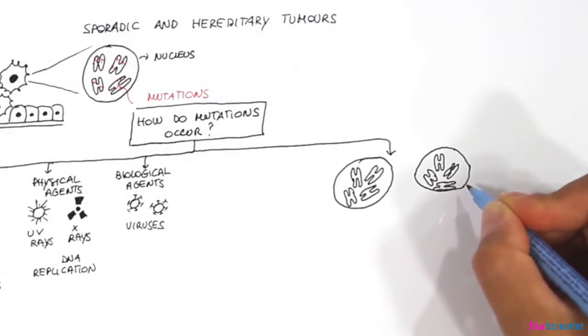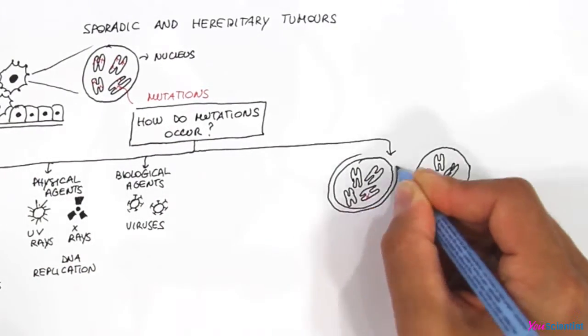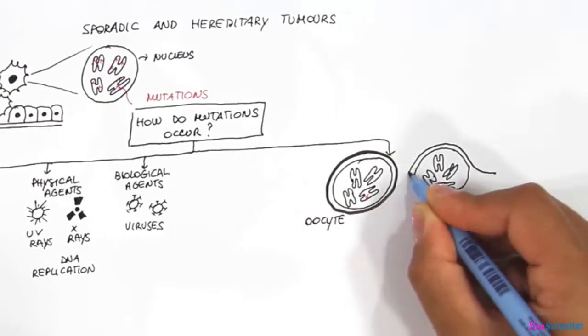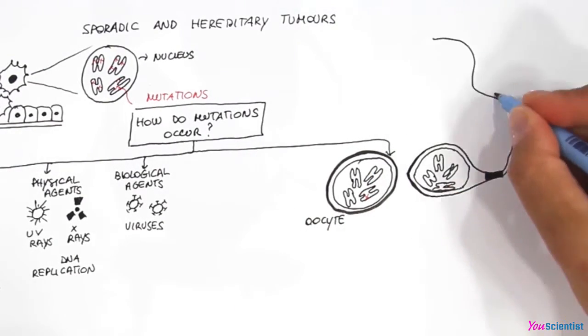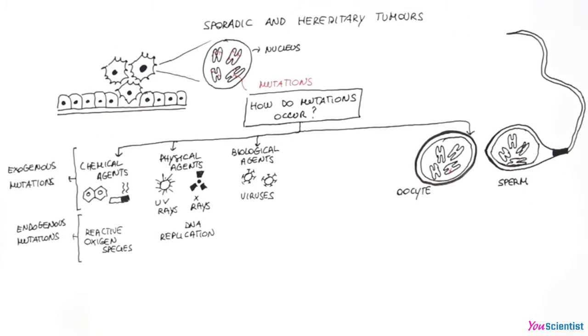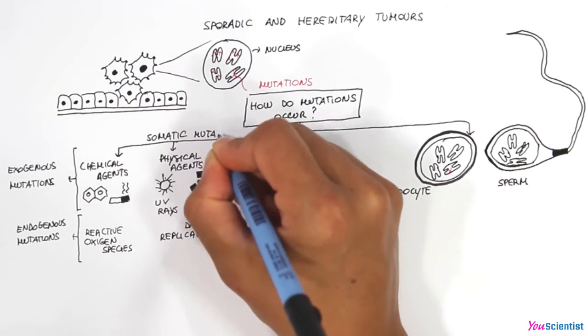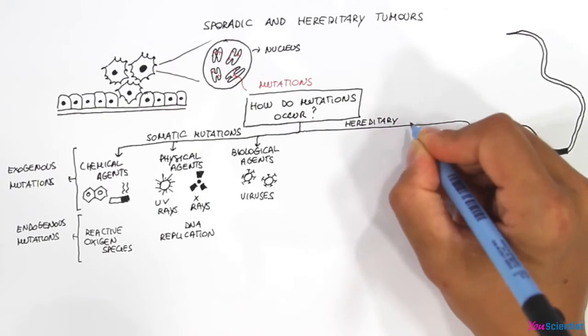There is also another possibility. Mutations can be inherited from our parents, if they were present in their germline cells, the oocyte and the sperm. In the first case we talk about acquired or somatic mutations, in the second we talk about inherited mutations.